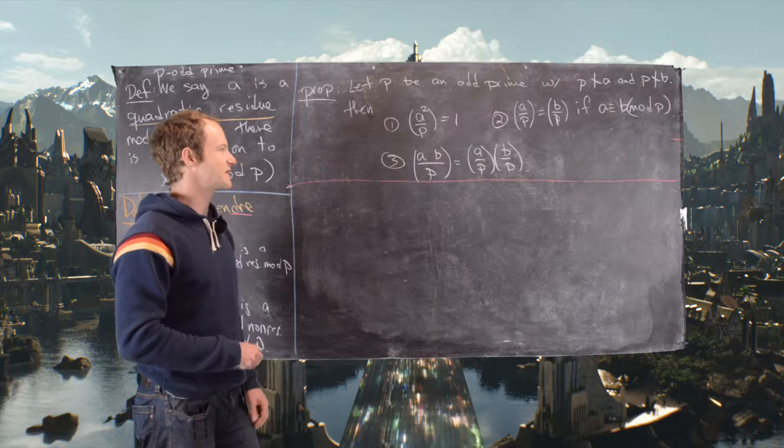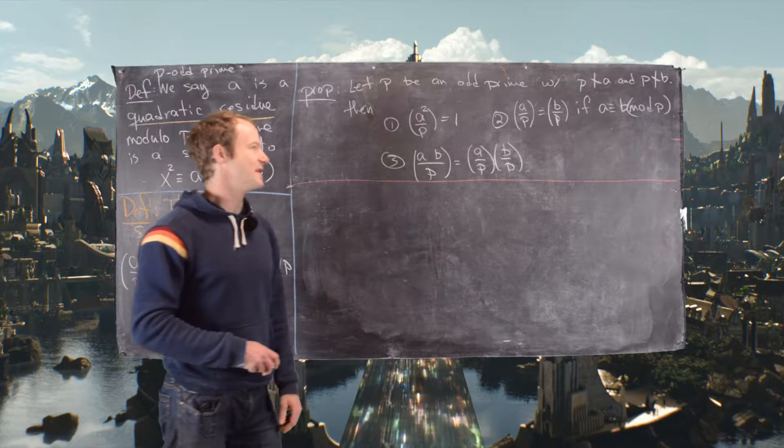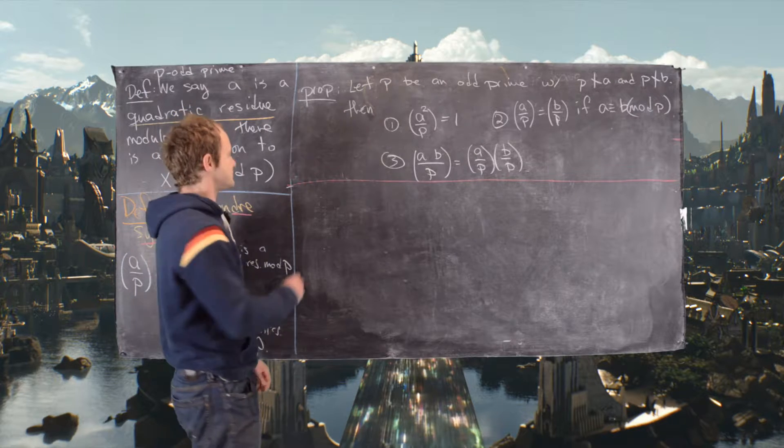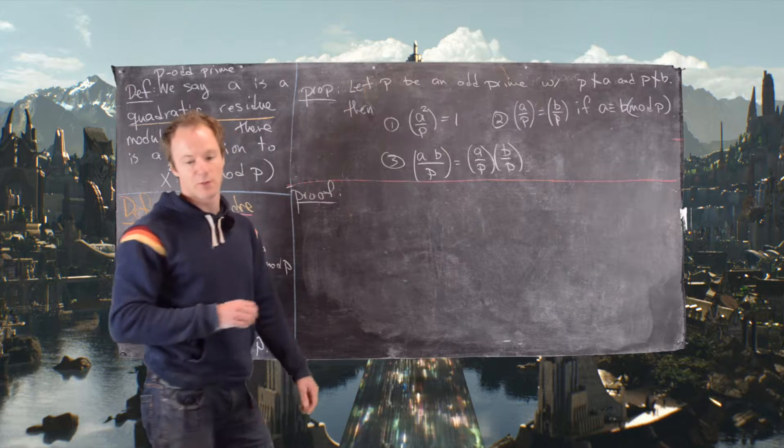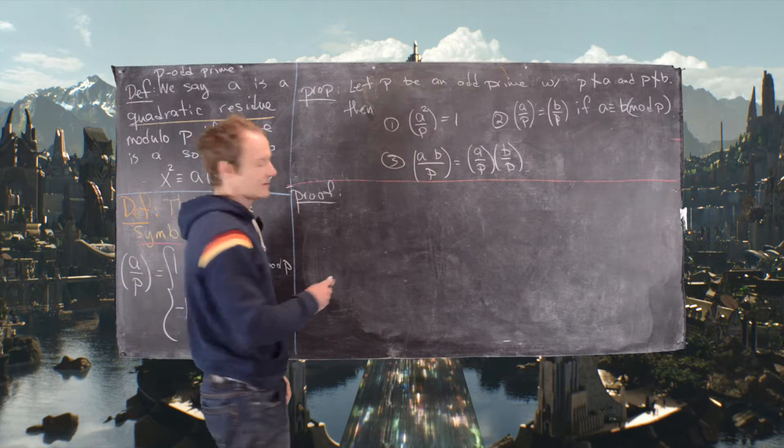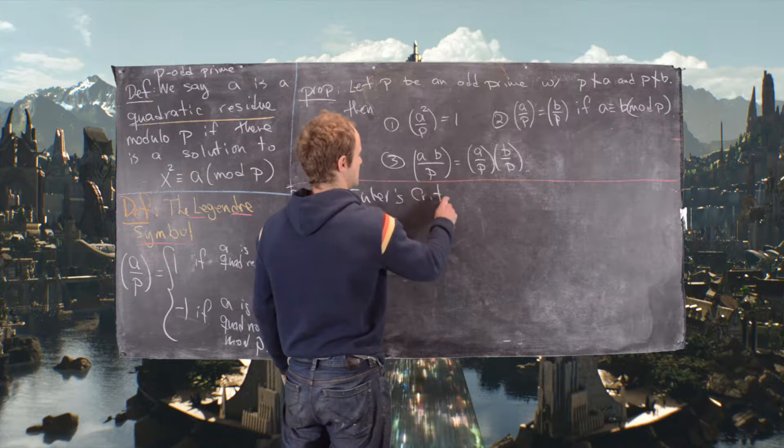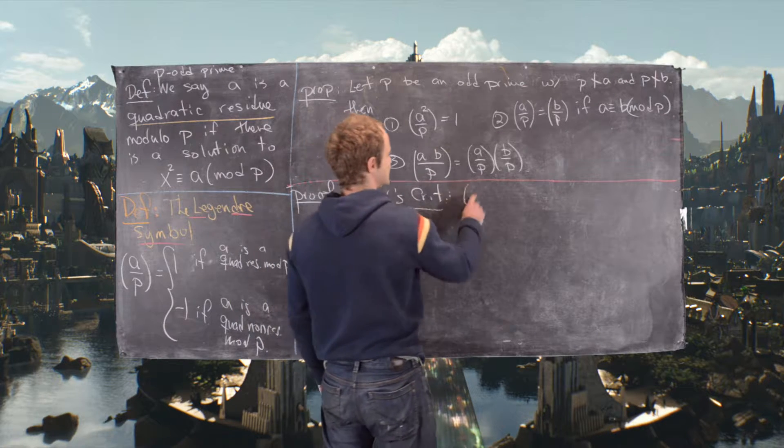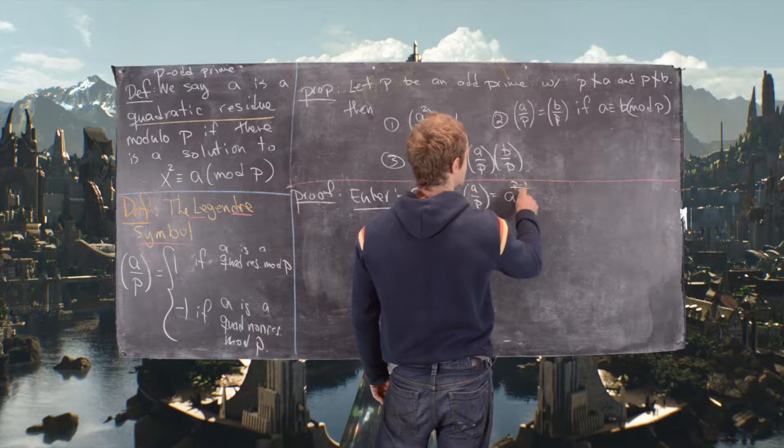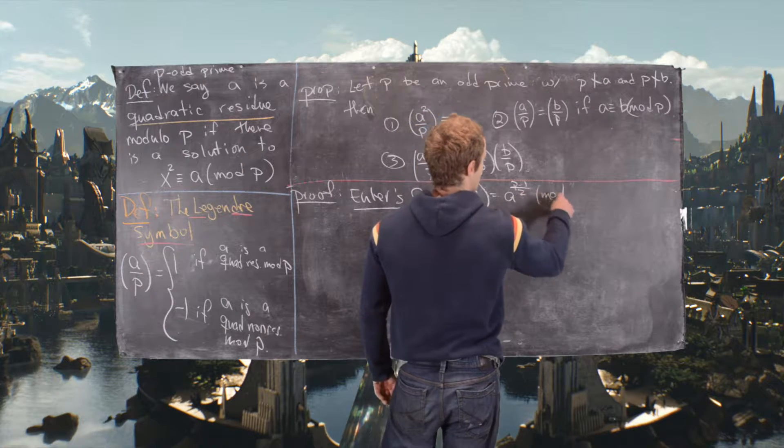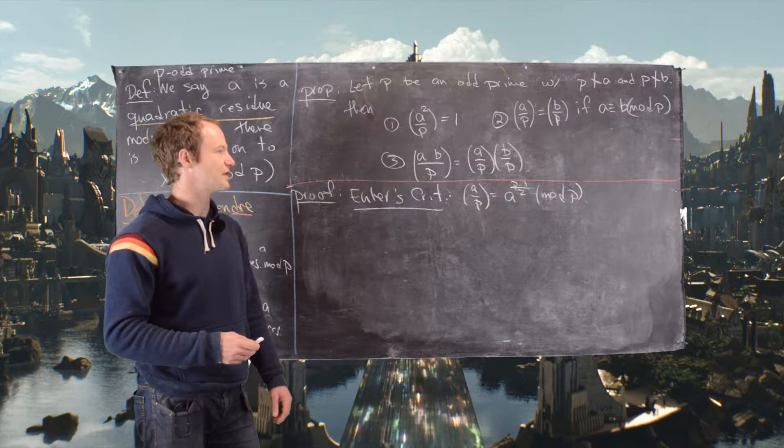So the one that we'll focus on is the following: a b by p is equal to a by p times b by p. For this bit of the proof, we're going to use Euler's criterion. So let's recall that. Euler's criterion says that a by p is the same thing as a to the p minus 1 over 2 mod p.